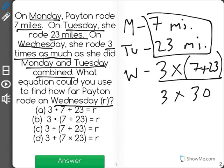It's important that we have the 7 plus 23 in parentheses because we have to add that before we multiply by 3.